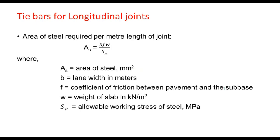Tie bars are used for longitudinal joints and the area of steel required per meter length of joint is estimated from an equation where B is the lane width (3.5 m), F is the coefficient of friction between pavement and sub-base (1.5), W is the weight of slab in kN per meter cube, and ST is the allowable working stress of steel in MPa.